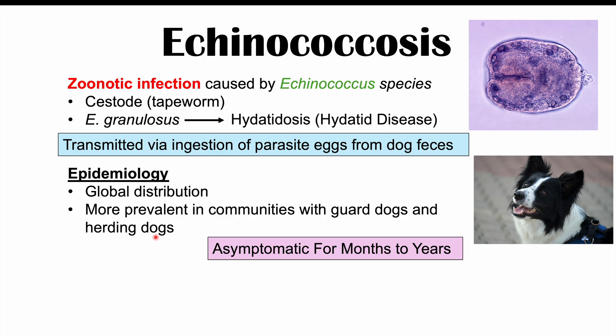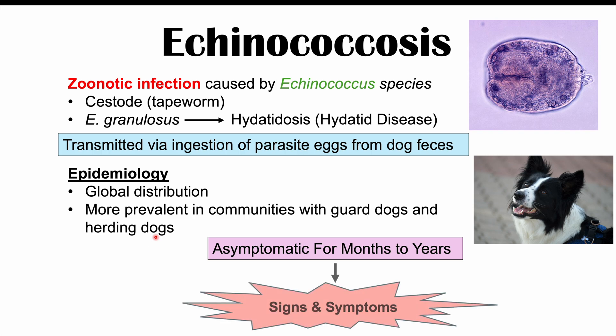Echinococcus can often be asymptomatic for months to years — meaning no symptoms at all. The cyst, once it gets into an area like the liver or lungs, can grow 1 to 5 centimeters per year and can go unrecognized and undiagnosed for up to 15 years. Once it has grown large enough, or if there are multiple cysts — which occurs in roughly 20 to 40 percent of cases — they can lead to signs and symptoms.